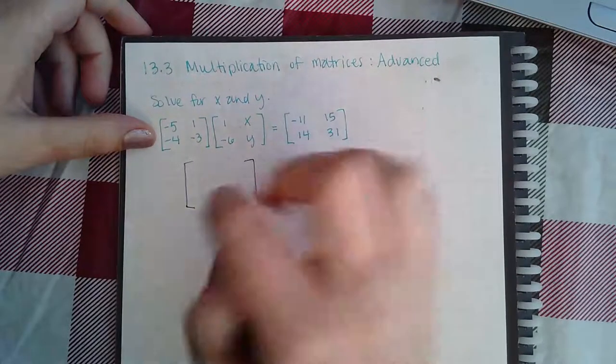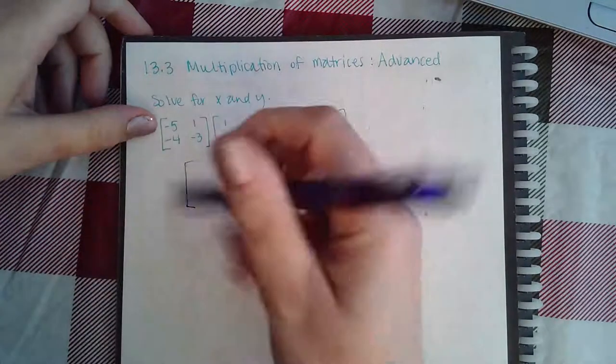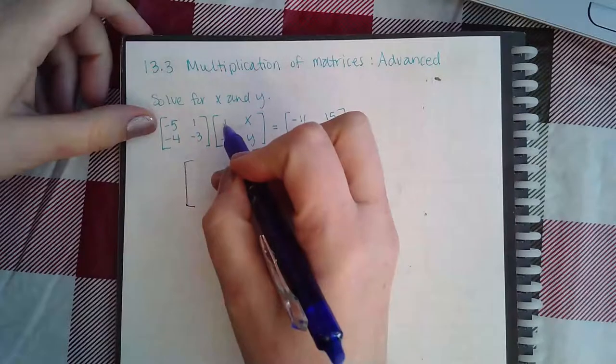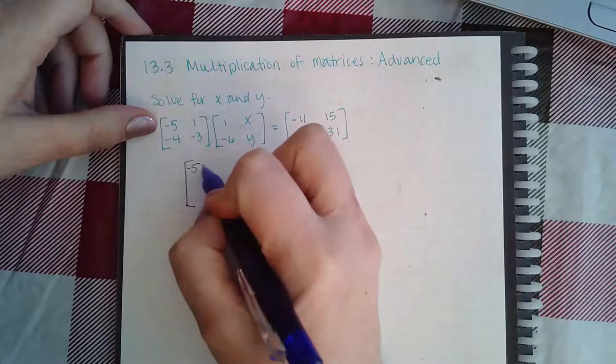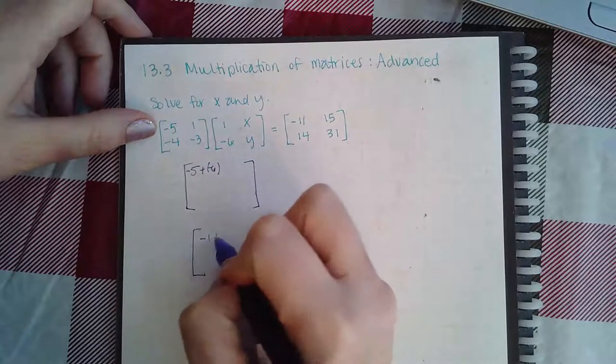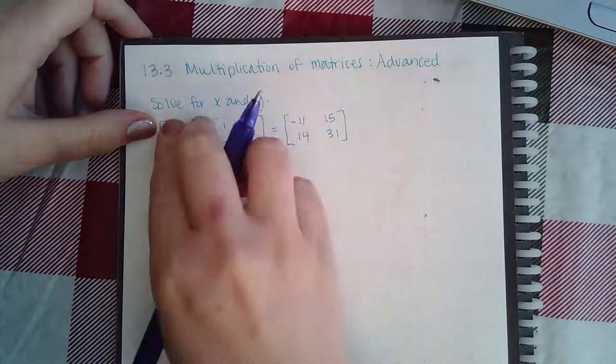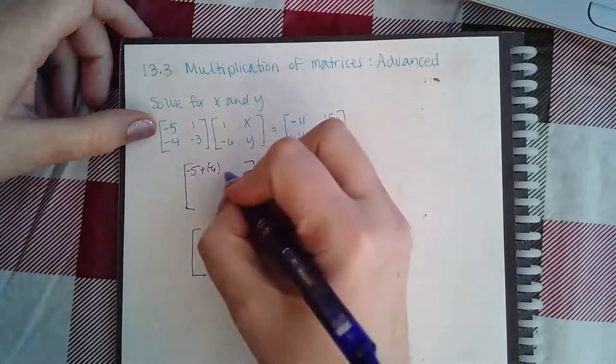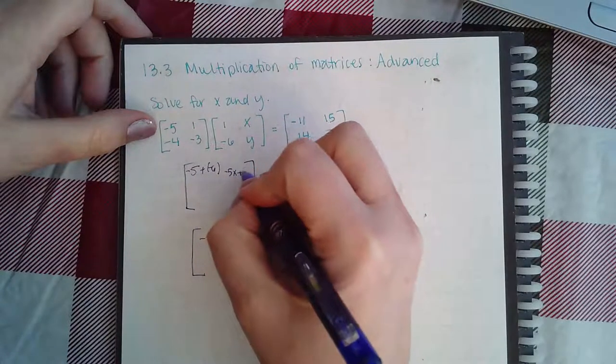First row times first column is going to be negative 5 plus negative 6 which is going to be negative 11. Then first row times second column is going to be negative 5x plus 1y, which is just negative 5x plus y.